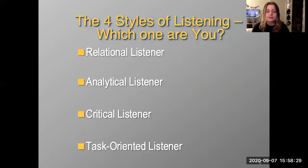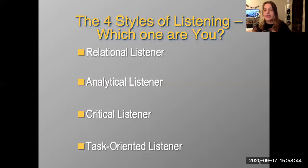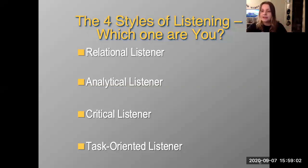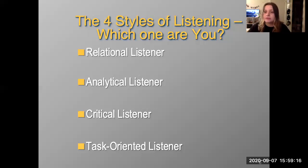Task-oriented listeners are focused only on the objective at hand. They want the information relevant to what they're doing and then they're done. They don't want to handle feelings like the relational listener, hear the whole story like the analytical listener, or worry about right and wrong like the critical listener. The task-oriented listener wants to be as efficient as possible, focused on the task at hand.